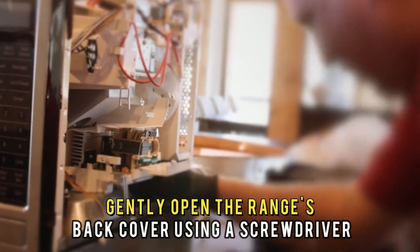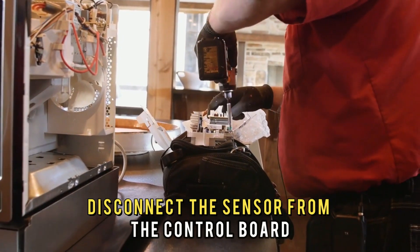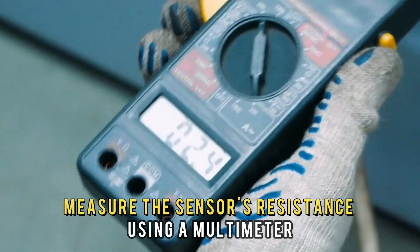Gently open the range's back cover using a screwdriver. Disconnect the sensor from the control board. Measure the sensor's resistance using a multimeter.